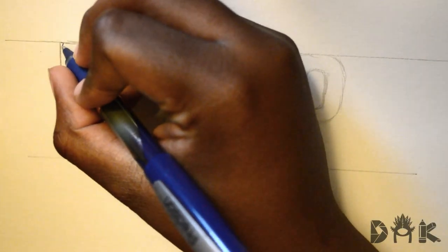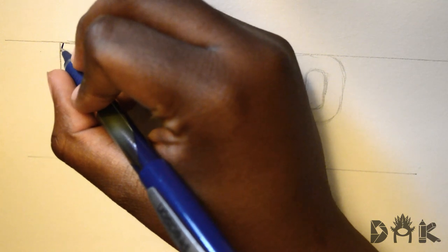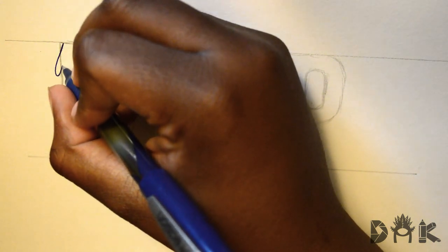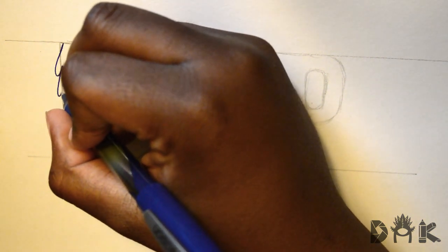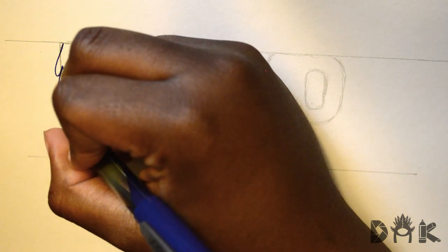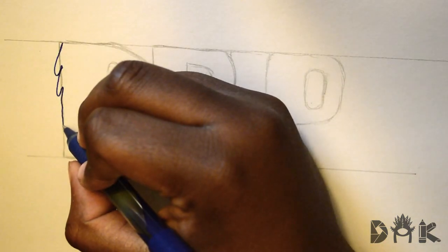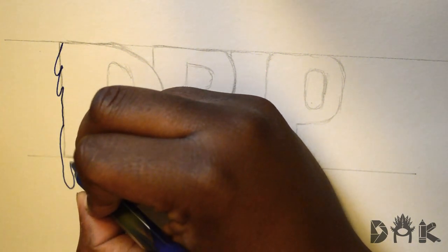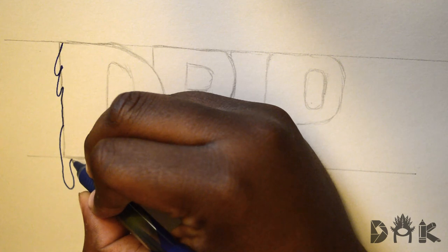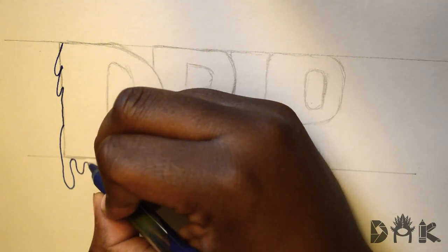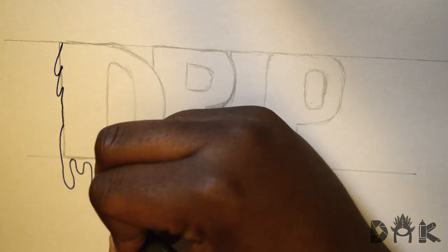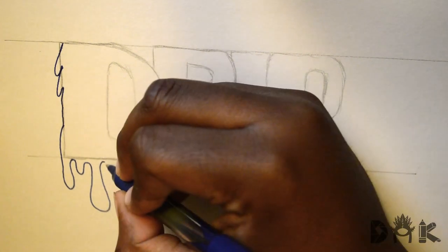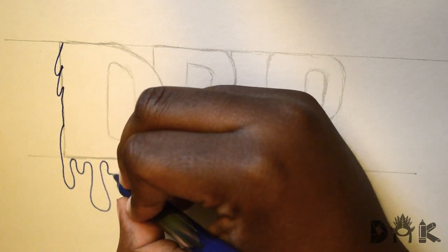Next we're gonna use this blue pen and you're gonna use that to do all of the drippiness of the letters. Everything's gonna be going down and hook up, little drops. You're gonna want to vary in the sizes and shapes so it looks more realistic.